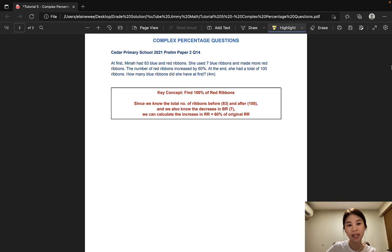The next question is taken from Sida Primary School and it is also worth 4 marks. At first, Mina had 83 blue and red ribbons. She used 7 blue ribbons and made more red ribbons. The number of red ribbons increased by 60%. At the end, she had a total of 100 ribbons. How many blue ribbons did she have at first?